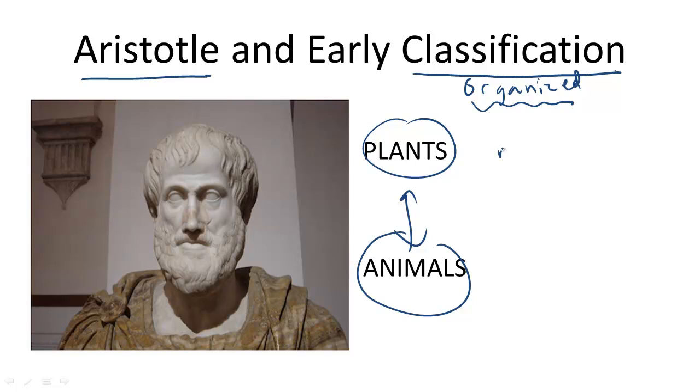But without a microscope to see much of any other life on the planet, he only formulated two categories of living things to fall into: plants and animals.